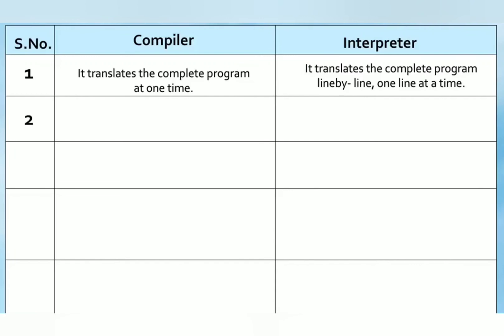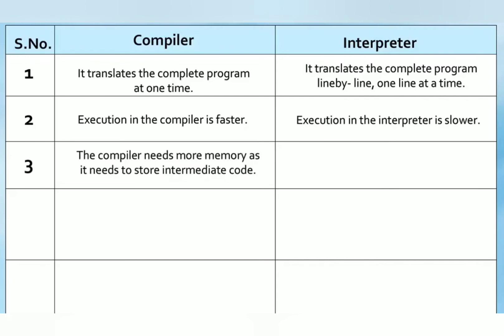Execution in compiler is faster. Execution in the interpreter is slower. The compiler needs more memory as it needs to store intermediate code. The interpreter needs less memory as no intermediate code is generated.